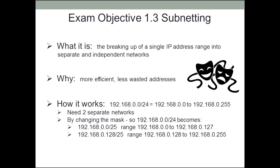Now let's talk about subnetting. What is subnetting? It's the breaking up of a single IP address range into separate and independent networks. Why do you want to do that? Because it's more efficient and there's less wasted addresses. If you have two routers connected together, you really don't want to waste an address range involving 255 individual addresses when you could just use four — one is the network number, two are the nodes, and one is the broadcast. All networks have to have a broadcast address, but it's much more efficient.